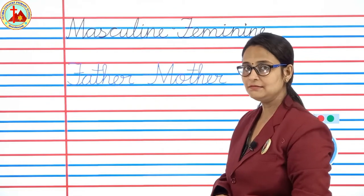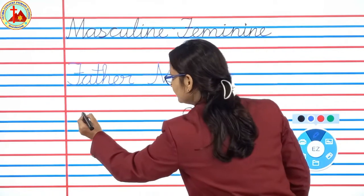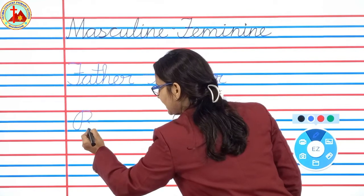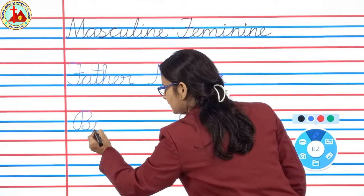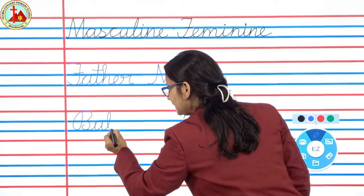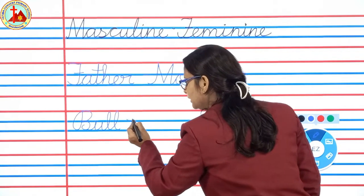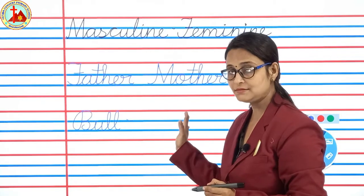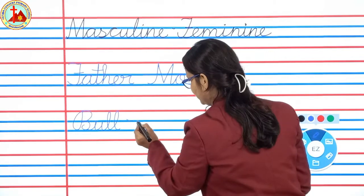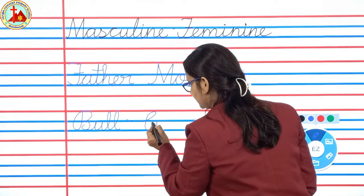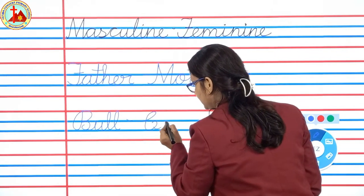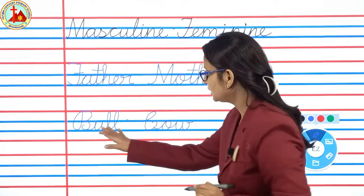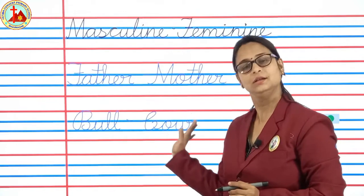Next example is bull. Say and write: B-U-L-L. Bull. And feminine word? Cow. C-O-W. Cow. Bull, cow.